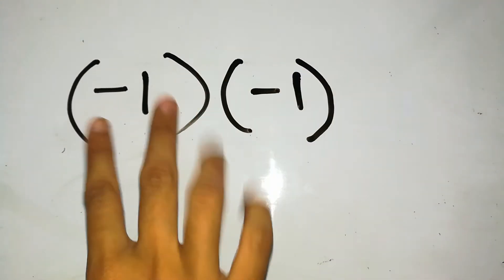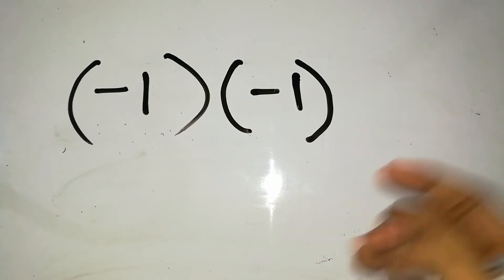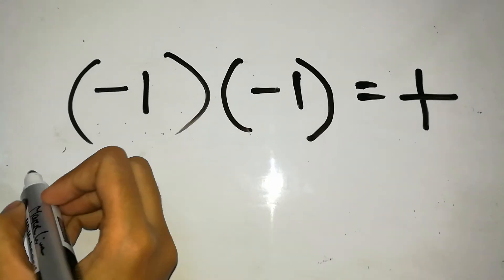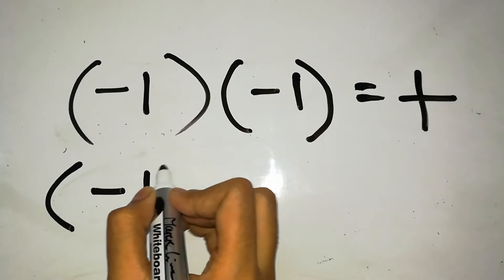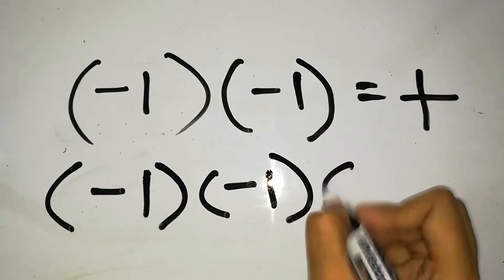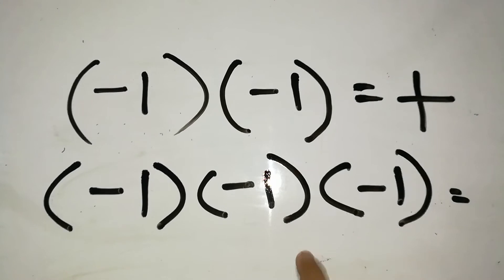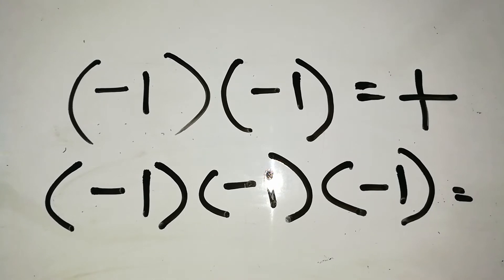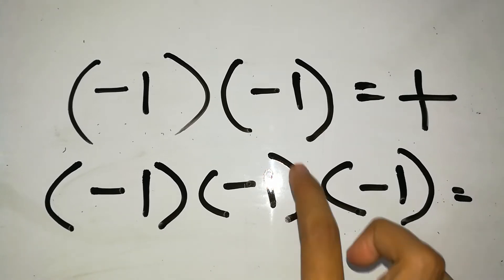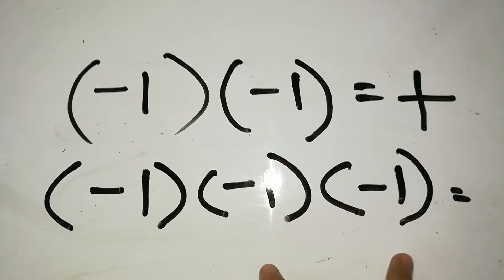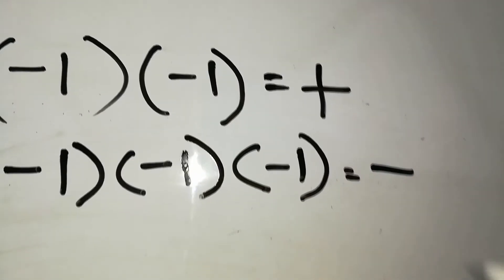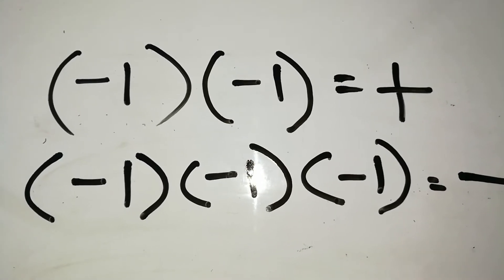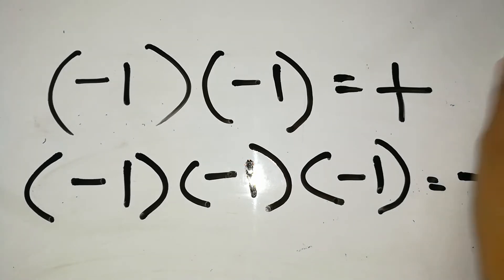But if there are an odd number of negative values multiplied, like minus 1 into minus 1 into minus 1, the first two are similar, so they become positive. Then positive 1 into negative 1 - dissimilar - so the answer is negative. This is an easy method: odd number of negative values multiplied gives negative, but even number of negative values multiplied gives positive.